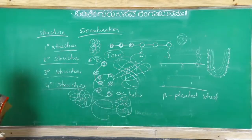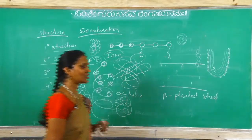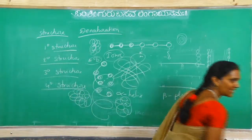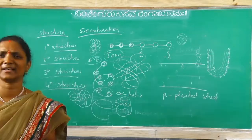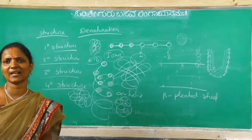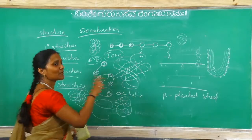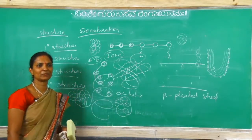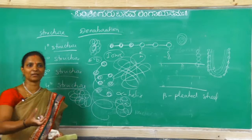Now denaturation. What is denaturation? Denaturation means if proteins are heated, or subject to excess cooling, or any acid, base, salt, or impurity is added, what happens? This protein loses its activity. Best example: egg.